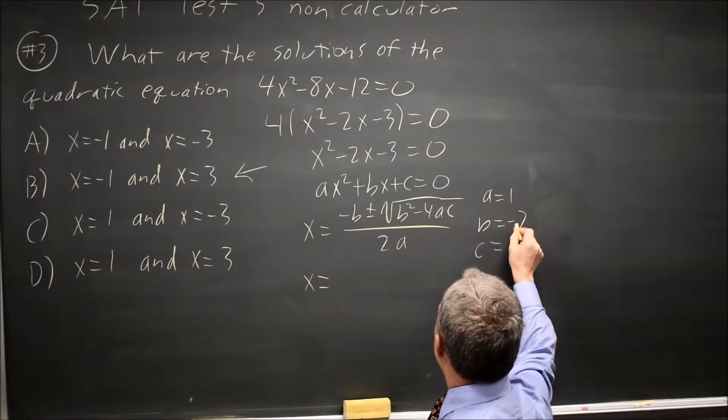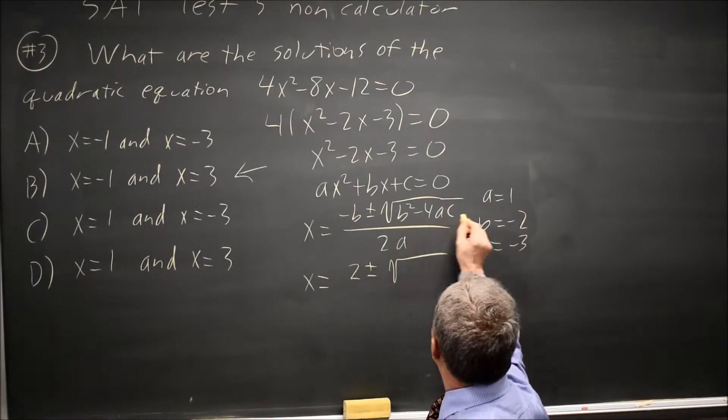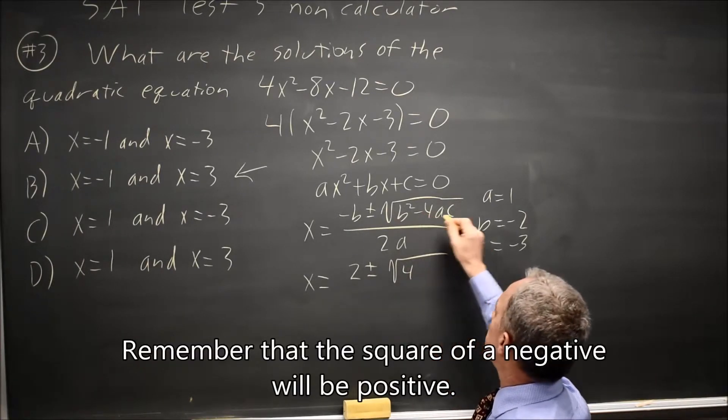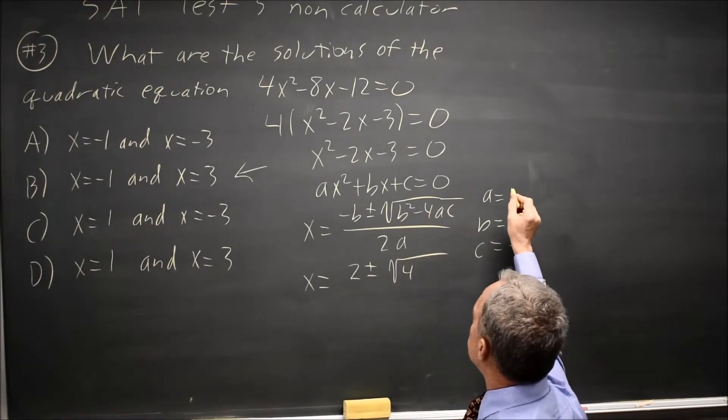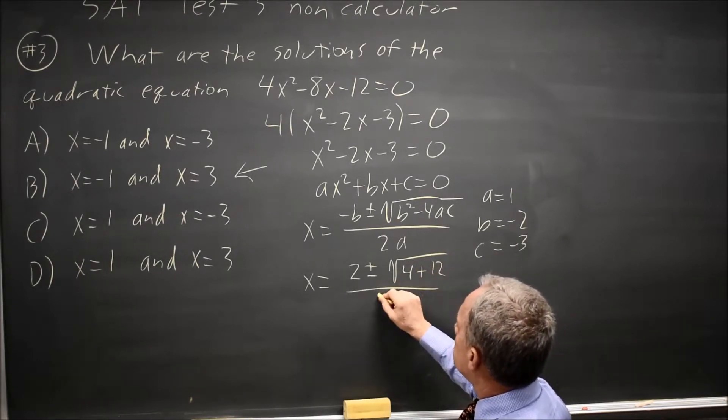Negative b would be minus negative 2 is positive 2. Square root b squared, negative 2 squared is 4, minus 4ac, negative 4 times negative 3 is positive 12, times a is still 12, over 2a is over 2.